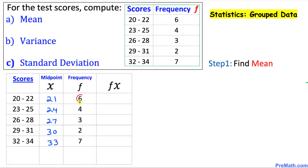In the fourth column we are going to multiply frequency times x. So frequency 6 times 21 gives us 126. Then 4 times 24 is 96, 3 times 27 is 81, likewise this is 60, and this is 231.